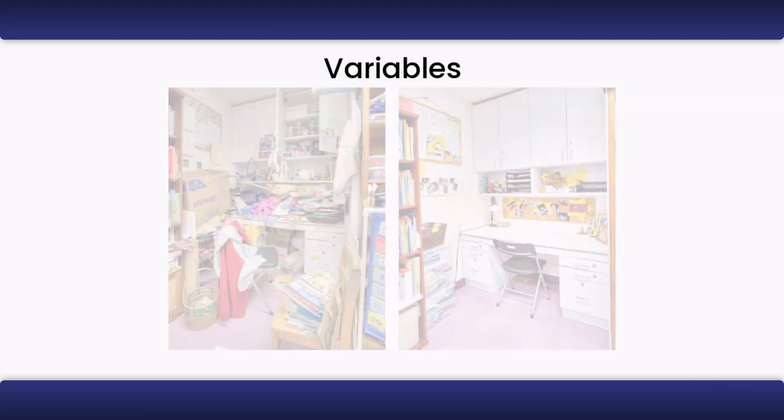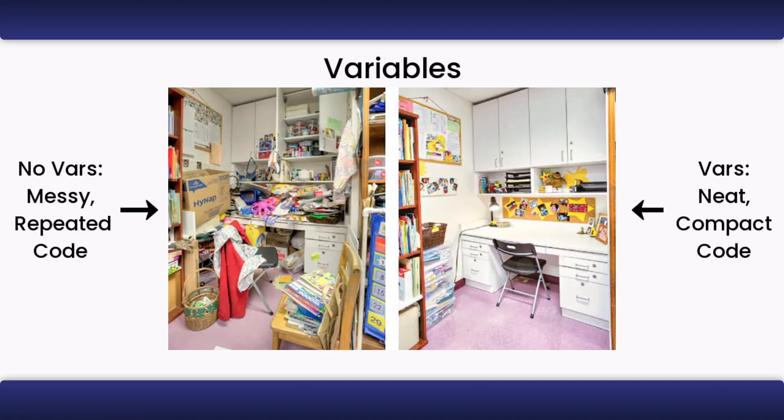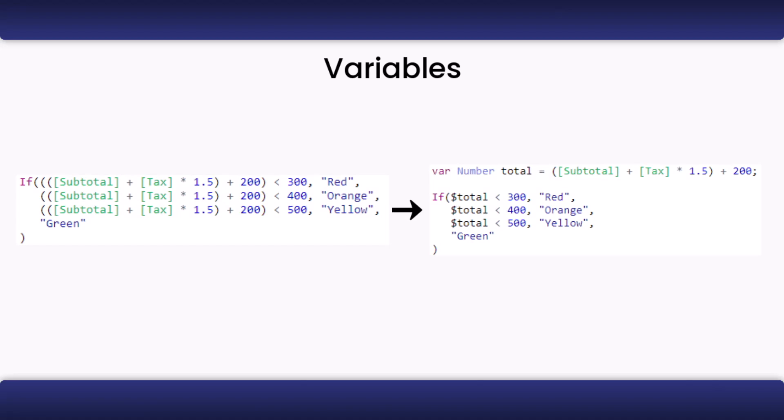Variables are an interesting topic in QuickBase formulas, as they are technically not needed at all. Using QuickBase variables is like organizing your room. Sure, you could leave everything spread out across the room. However, organizing and compartmentalizing will make your room look much cleaner and easier to use. Variables' main purpose is just that, to organize and compact your formula into a more readable state. We should try to use variables whenever we see something repeated in the formula more than two times.